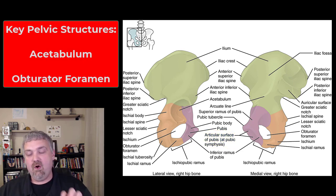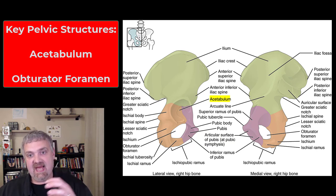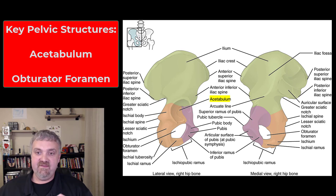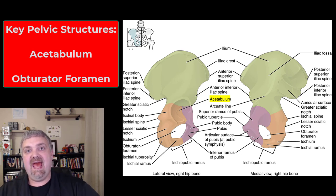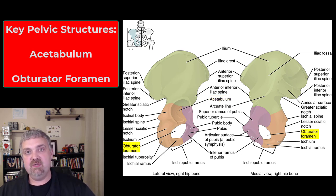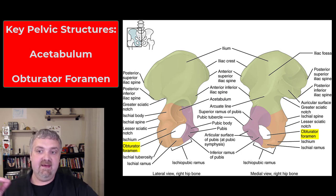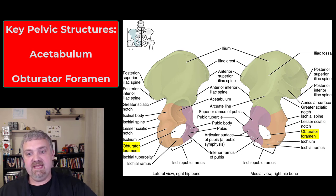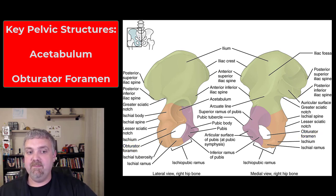There are a couple more structures that all three bones combine to form. One is the acetabulum — that's the socket of the ball-and-socket joint — where the femur attaches for the hip joint, formed by the ilium, ischium, and pubis. Then we have the obturator foramen, through which the lateral rotator muscles of the hip and other important structures travel, formed by the pubis and the ischium.